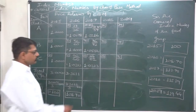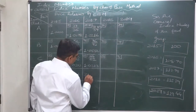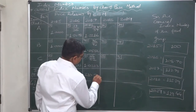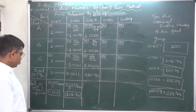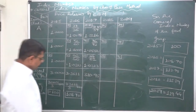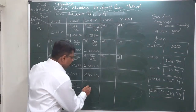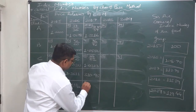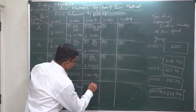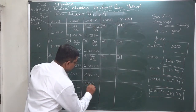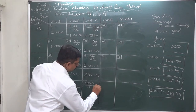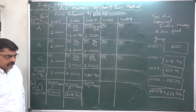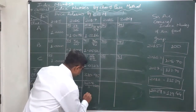The summation of price relatives comes to 310.95. So the general price index for the year 2017 will be 310.95 divided by 3 (the number of items), multiplied by 100. This comes to 103.65.